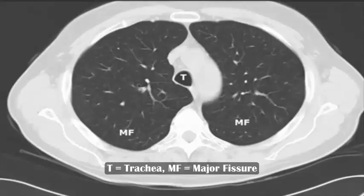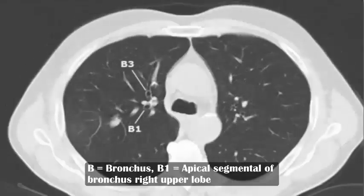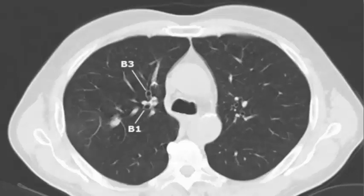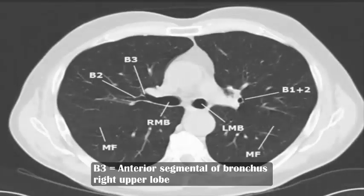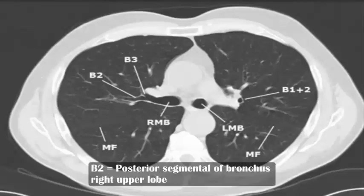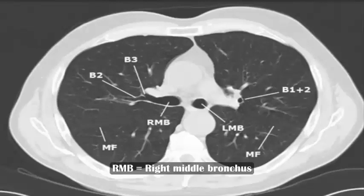Trachea, MF Major Fissure, B1 Apical Segment of Bronchus Right Upper Lobe, B3 Anterior Segment of Bronchus Right Upper Lobe, B2 Posterior Segment of Bronchus Right Upper Lobe, RMB Right Middle Bronchus, MF Major Fissure.